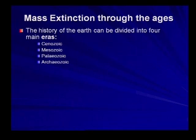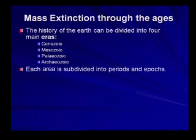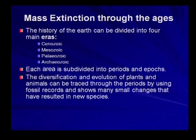Each era is subdivided into periods or epochs, and the diversification and evolution of plants and animals can be traced to these periods by using fossil records. Scientists don't just make up theories — they don't just pick four eras and say those are the main eras of the history of the earth.